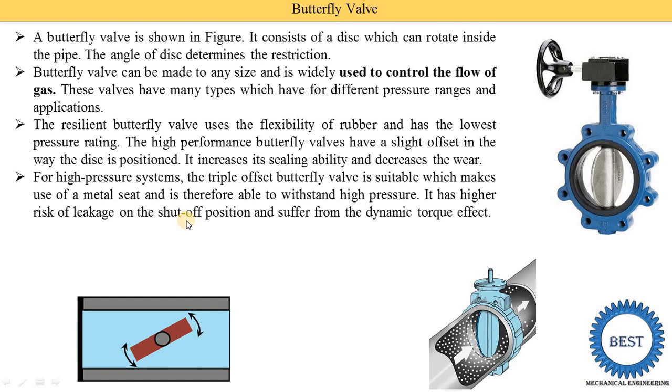It has higher risk of leakage on the shutoff positions and suffer from the dynamic torque effect. Shutoff means when this valve is closed. It is called as the shutoff conditions. At that time, there is a high risk of the leakage because when the fluid is supplied from this side and the valve is closed, here the high pressure is created and due to high pressure a leakage of the air or gas is possible between the disc and the seal.